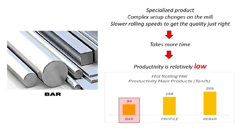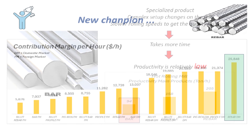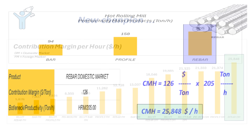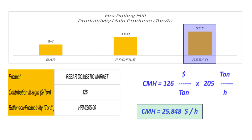Now let's compare that to the new champion — the product that jumps to the top based on CMH. It's rebar domestic market. Rebar, like for construction — that seems pretty basic. And its contribution margin is lower than the bar domestic: $126 per ton. But rebar is the opposite of that specialty bar — it's simple, high volume, you just run it straight through the mill fast. The HRM can crank out 205 tons of rebar every hour — more than double the speed of the bar domestic. When you multiply that lower CM of $126 by the super high productivity of 205 tons per hour, you get a massive CMH of $25,848 per hour.